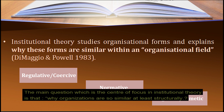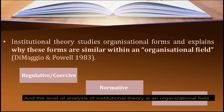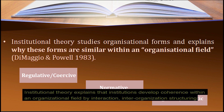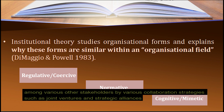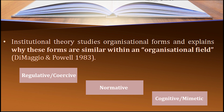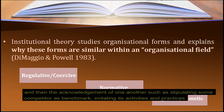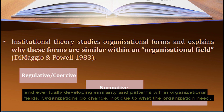The main question which is the center of focus in institutional theory is why organizations are so similar, at least structurally, and the level of analysis is the organizational field. Institutional theory explains that institutions develop coherence within an organizational field by interaction, inter-organization structuring, information exchange, collaboration strategies such as joint ventures and strategic alliances, and acknowledgment of one another — such as tabulating a competitor as a benchmark and imitating its activities and practices — which eventually develops similarity and pattern within the organizational field.